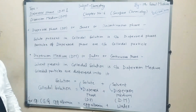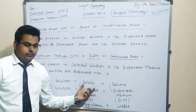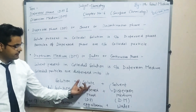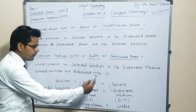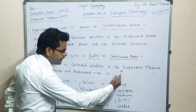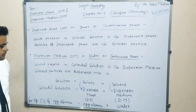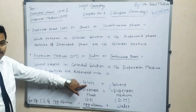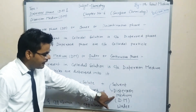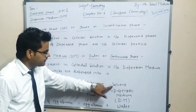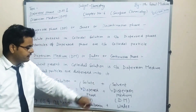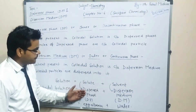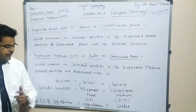We all know that solute is always present in less quantity in solution and solvent is present in high quantity. So dispersed phase acts as solute in colloidal solution and dispersion medium acts as solvent in colloidal solution. We can understand dispersed phase and dispersion medium by taking an example.